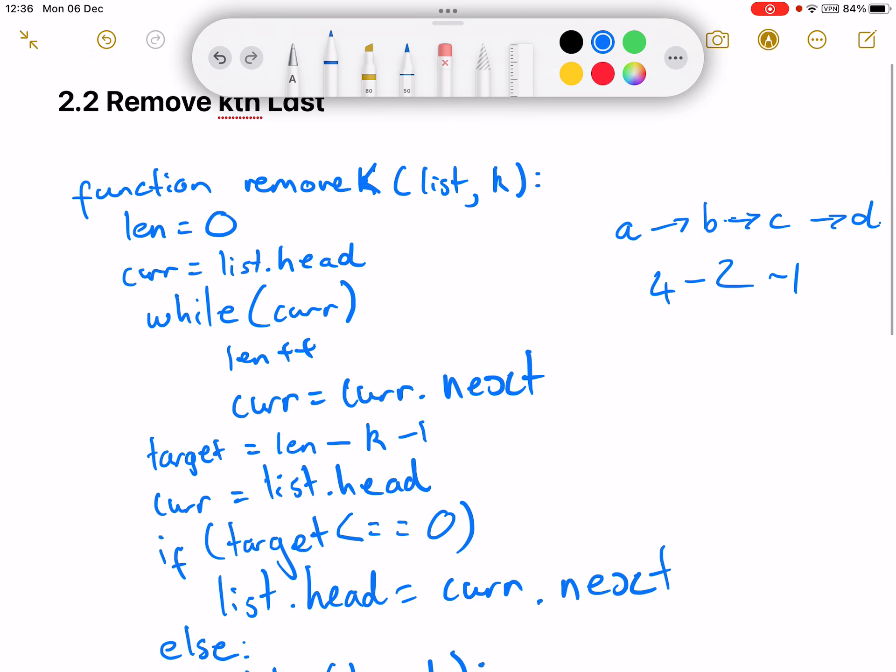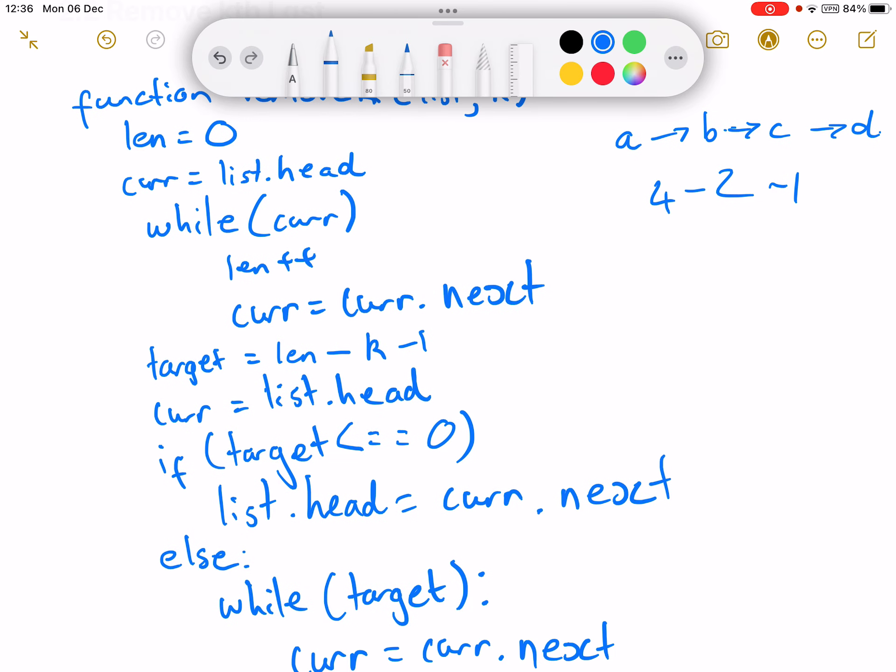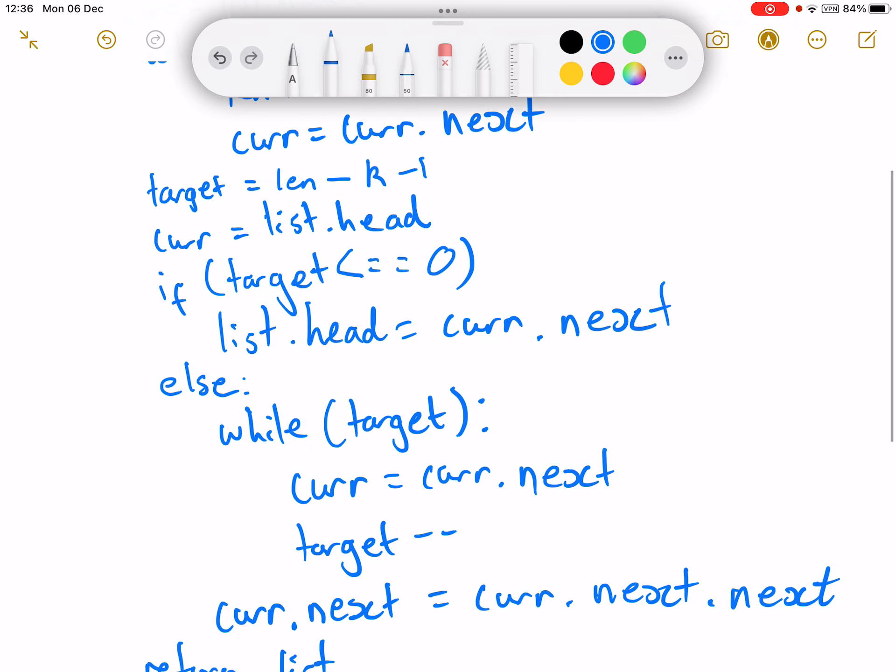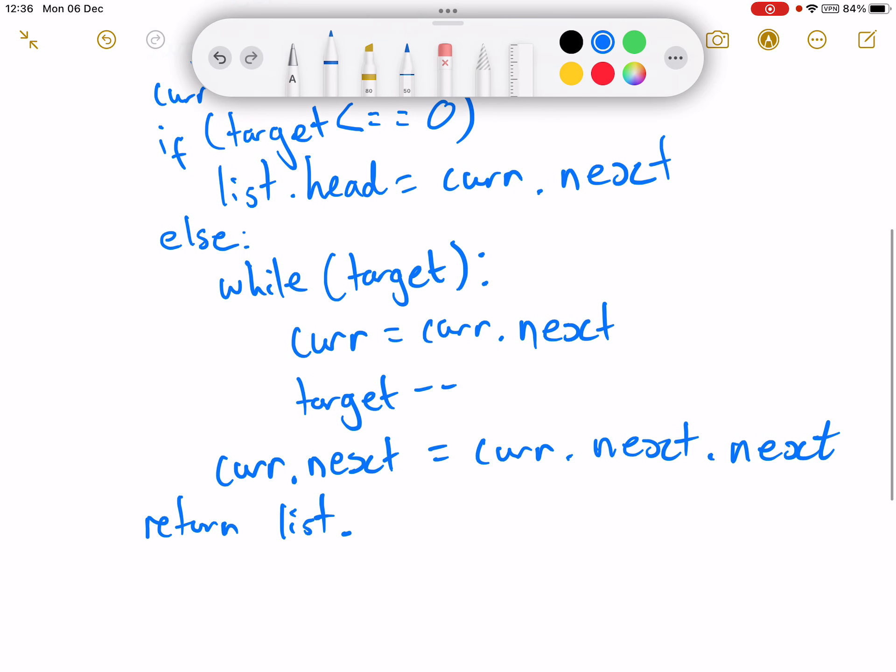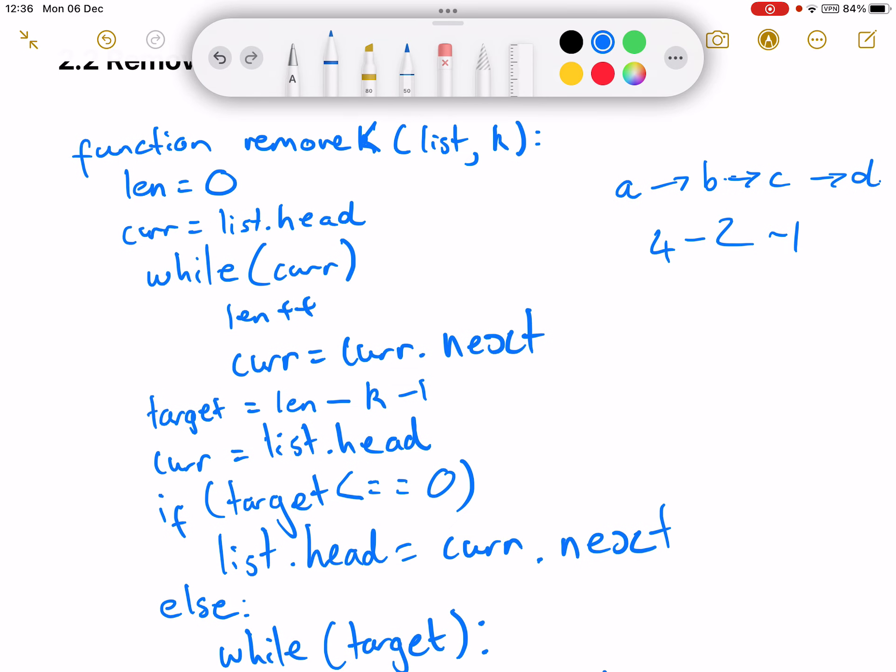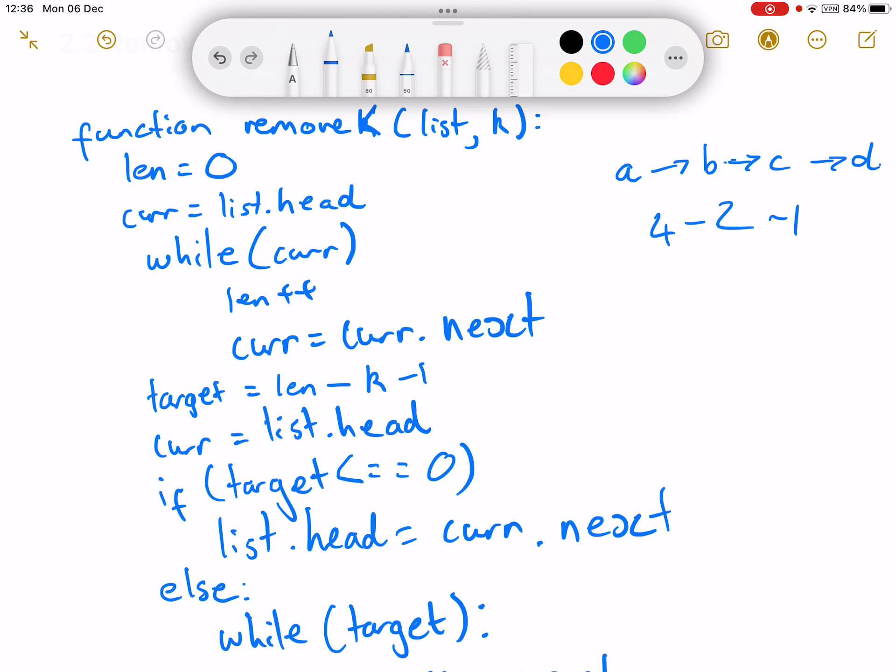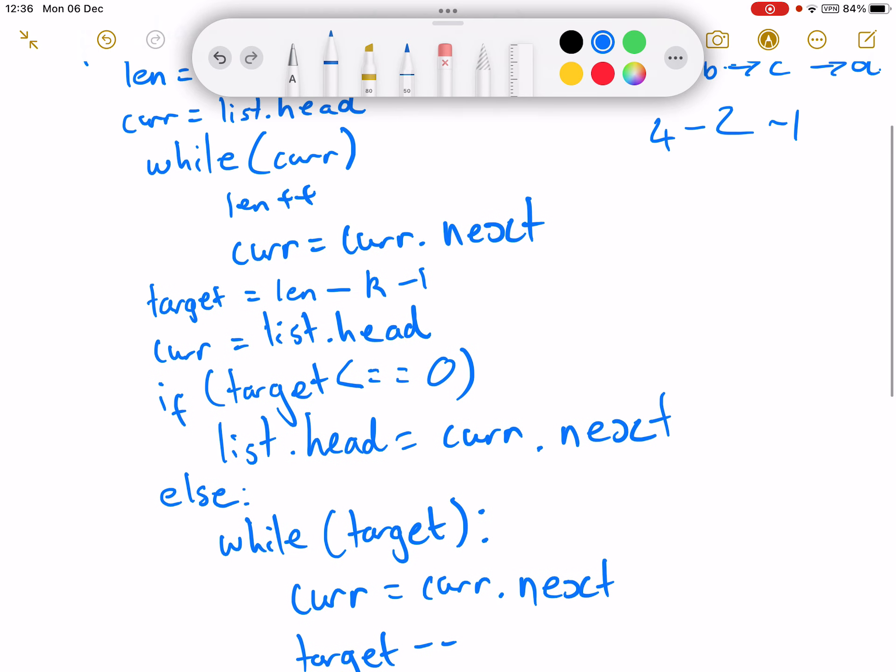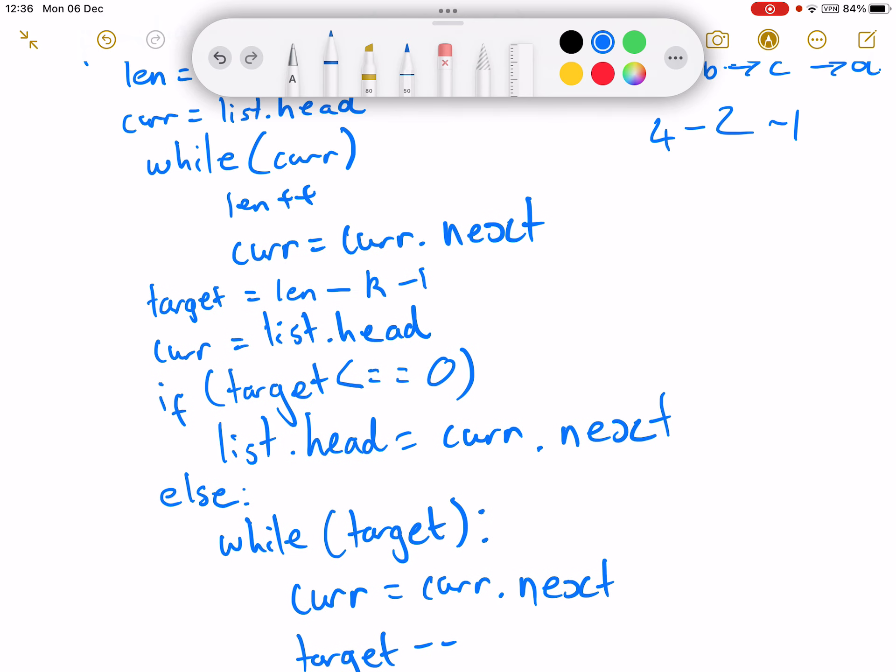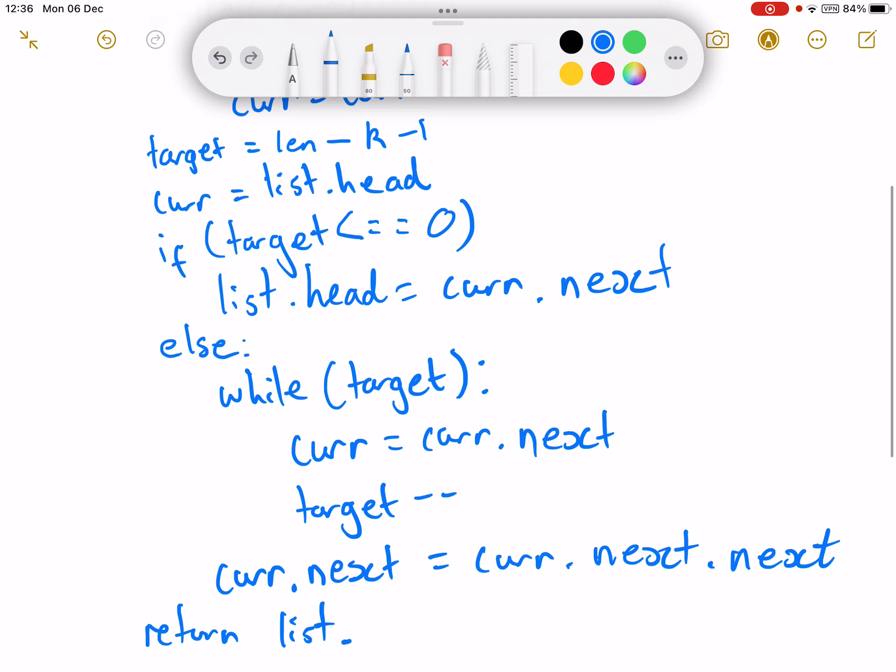So what I was thinking of doing is I wanted to count the length and then try to go right up before that nth element and then remove it. So I'd go up to this point here which is the element before the one I'm supposed to remove, and then once I reach it I bridge it over and return the list.